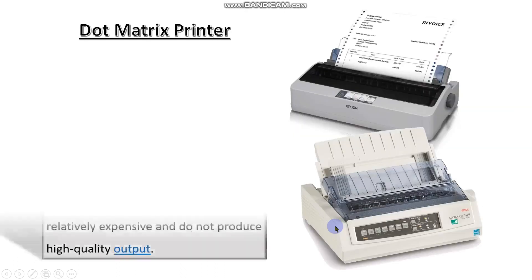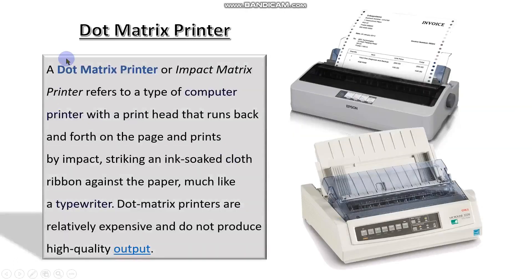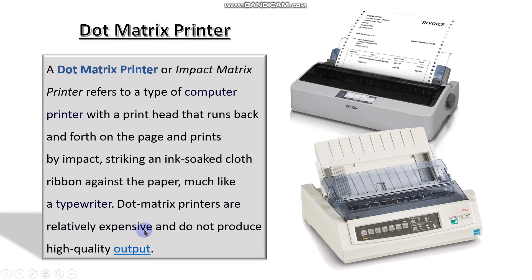Let's see the different kinds of printers. First, we have the dot matrix printer. You must have seen these kinds of printers in banks. A dot matrix printer, or impact matrix printer, refers to a type of printer with a print head that runs back and forth on a page and prints by impact, striking an ink-soaked cloth ribbon against the paper, much like a typewriter. Dot matrix printers are relatively expensive and do not produce high quality output — they are basically seen in banks only.